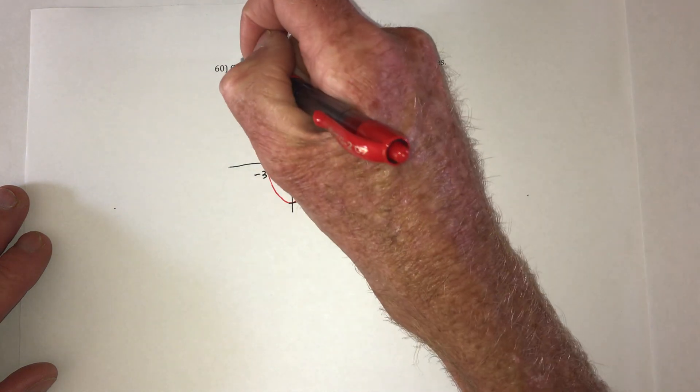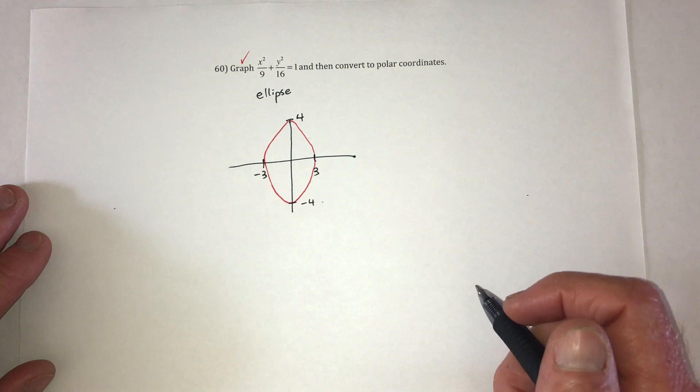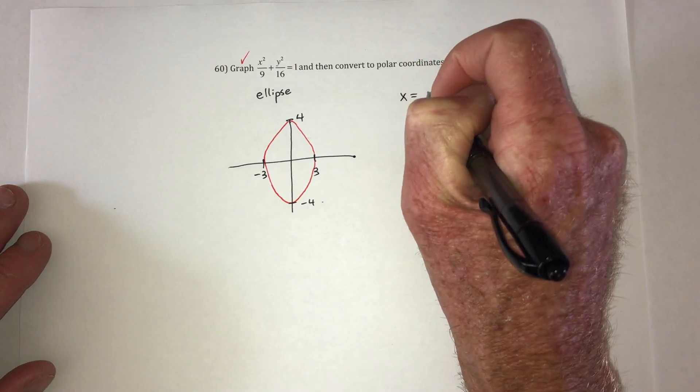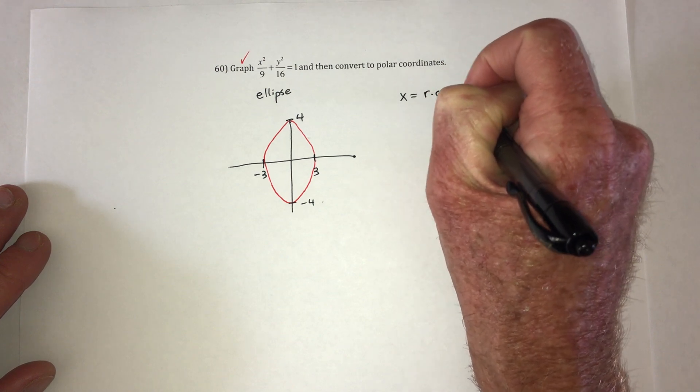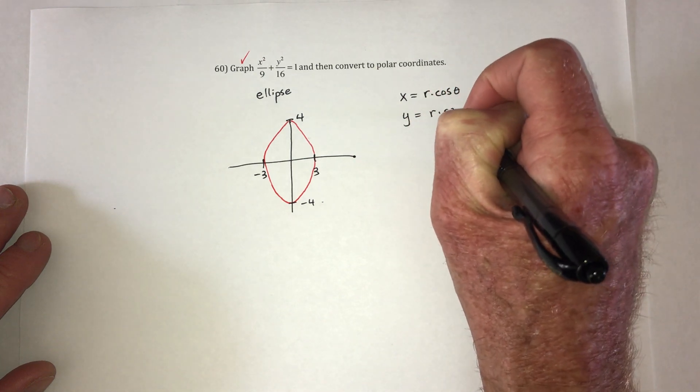So I did this part, graph it. Now convert to polar coordinates. So in the last podcast, number 59, I went over how you get that x is equal to r cosine theta and y is equal to r sine theta.